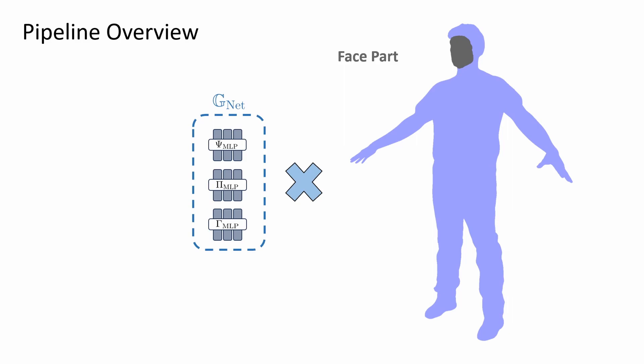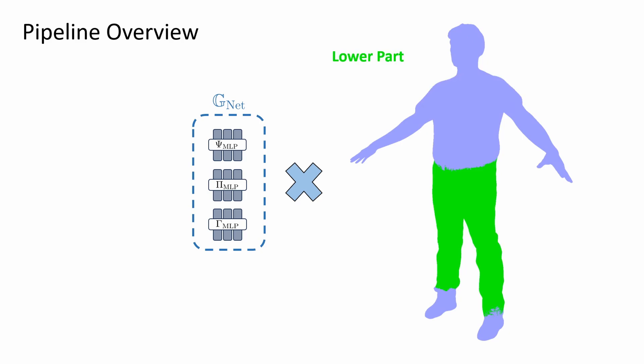One network models the face part. Another models the upper garment, which in this case is a t-shirt. The third deals with the lower garment. Finally, the last one models the body, marked by the blue color, and the regions under the garment, marked by the gray color, where we inject additional Gaussians.